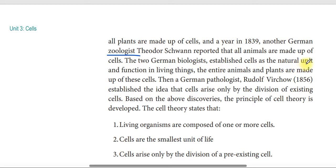The German biologists established the cell as the natural unit of the functioning living thing. The entire animal and plant are made up of cells — the cell is the functional, smallest building block of life. The German pathologist Rudolf Virchow in 1856 established the idea that cells arise only by the division of existing cells.